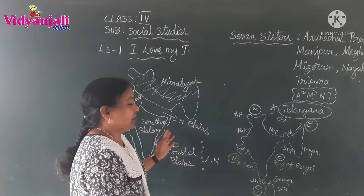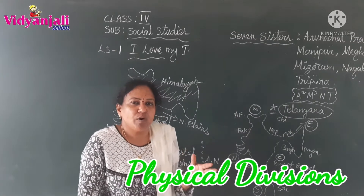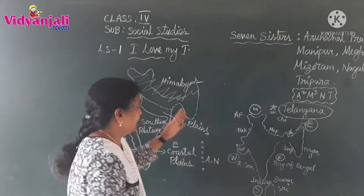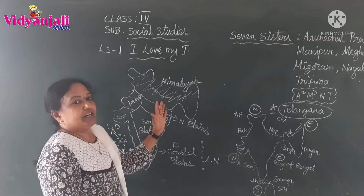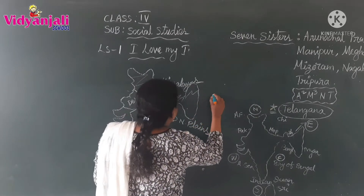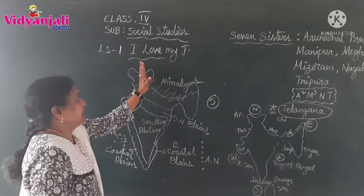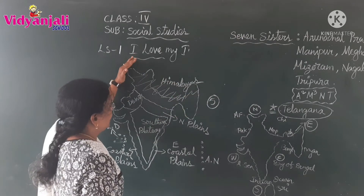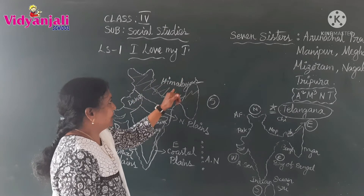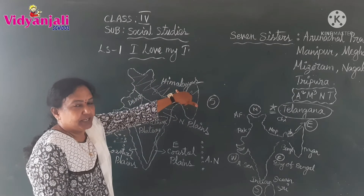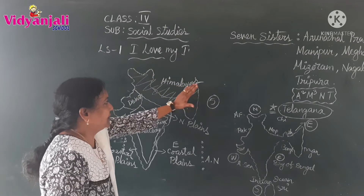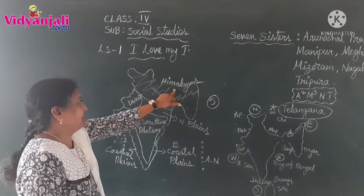Now, the next point is about the physical divisions of India. How is India divided into physical divisions? Our India is divided into five physical divisions. The first one is the Himalayan mountain ranges. States like Jammu and Kashmir and Arunachal Pradesh are located in the Himalayan ranges.